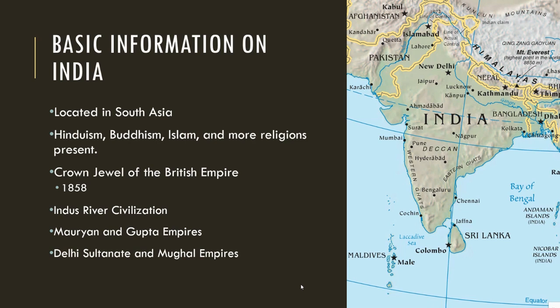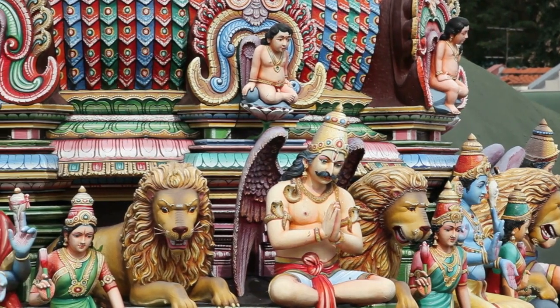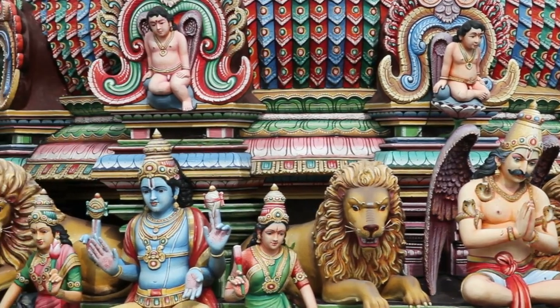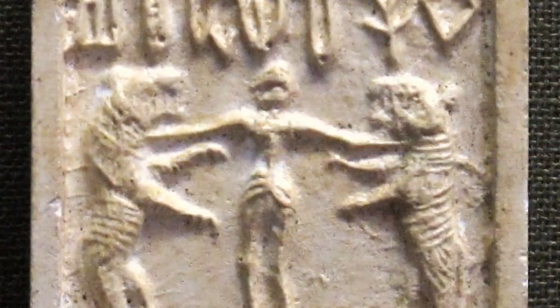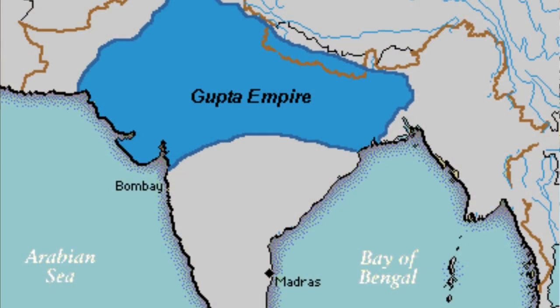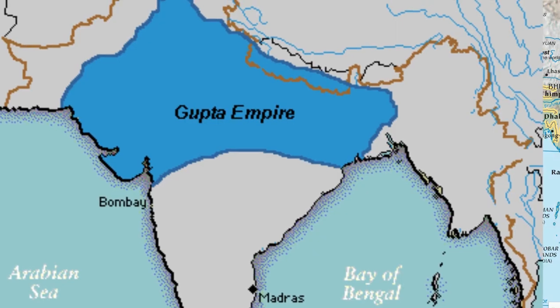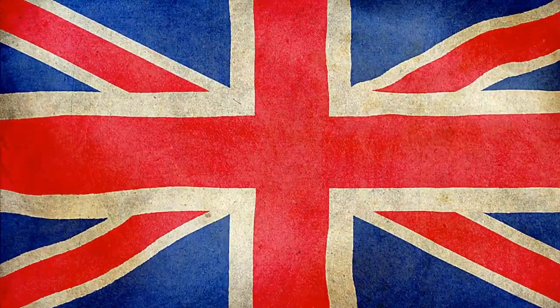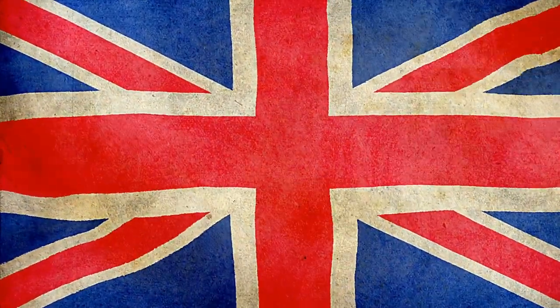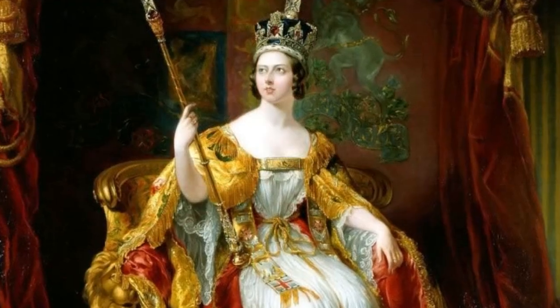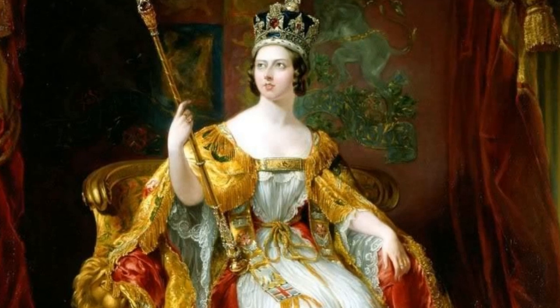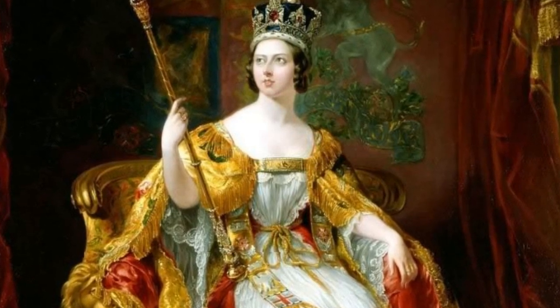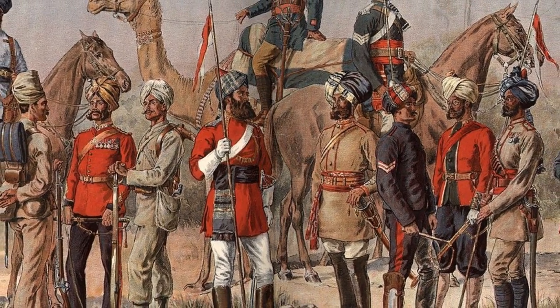Going back over some basic information on India: it's located in South Asia, and it is the birthplace of Hinduism and Buddhism. Islam also moved into the area, and other religions are present. It is also the birthplace of the Indus River Civilization, one of the first four civilizations on this planet. India has had numerous great empires throughout its long and rich history, from the Mauryan to the Gupta, from the Delhi Sultanate to the Mughals. However, in 1858, the British claimed India as an official colony and called it their crown jewel. The British had been operating in India for quite some time under the British East India Company, but in 1858, after the Sepoy Mutiny, they officially put it underneath the British government.